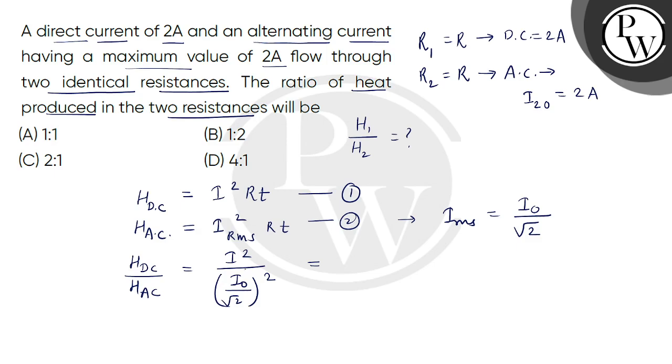So the answer we will get, the value of I DC is 2 square, and I not, that is the peak value of AC, is also 2. So this is 2 divided by square root of 2 whole square. So we will get square root of 2 whole square, which means 2 is to 1.